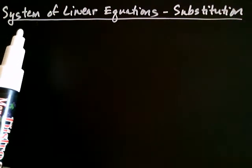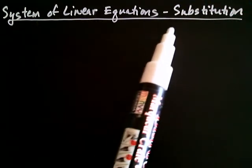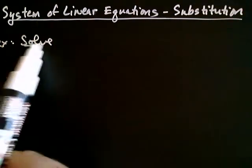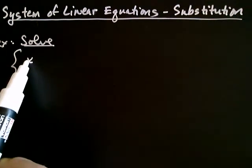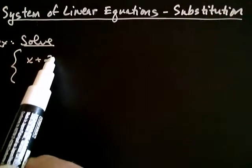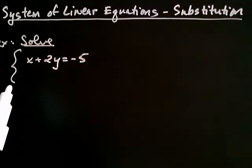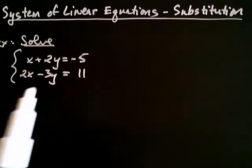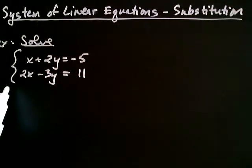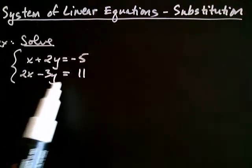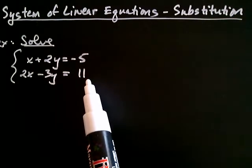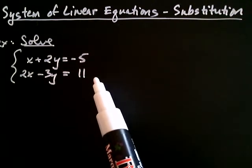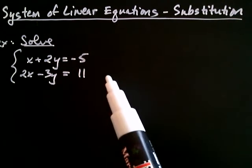Here we're going to solve a system of linear equations using what's called the substitution method. Let's say we wanted to solve the following system of linear equations. The first line is x plus 2y is equal to negative 5, and the second line is given by 2x minus 3y is equal to 11. When I put a brace here, that's telling us that these two lines are to be thought of as together — we're looking for an ordered pair that's on both lines. If we think graphically, we're looking for a point that's on both lines.